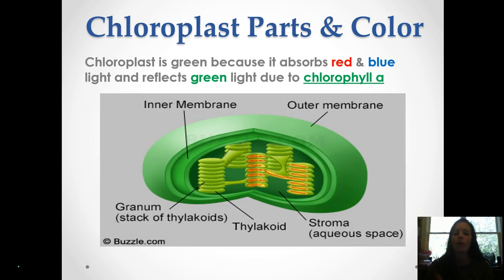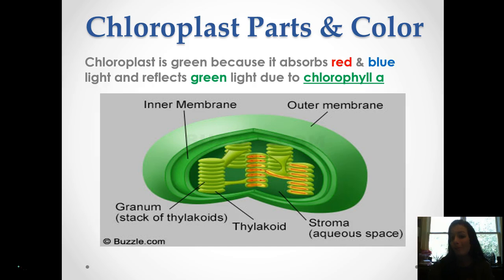A little bit about the chloroplast. So it's green, but it absorbs red and blue light and reflects green light. This is due to something called chlorophyll A, and this is why the chloroplast is green in color. The chloroplast also has two membranes — an inner and an outer membrane. And then we have a granum, thylakoid, and stroma, which are the parts of the interior that are really important to the process of photosynthesis.